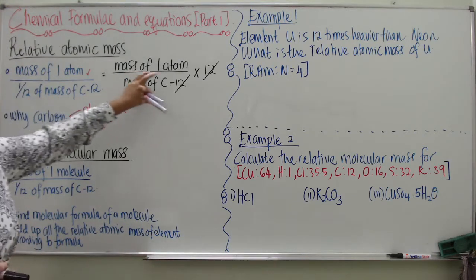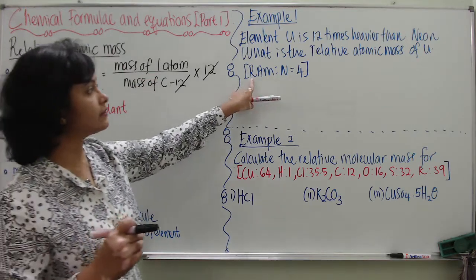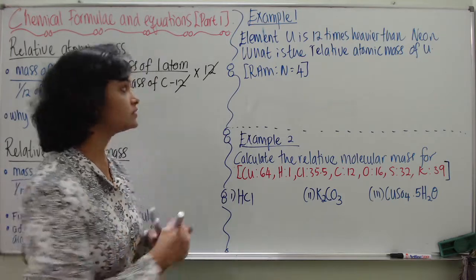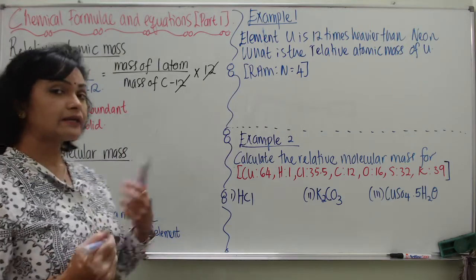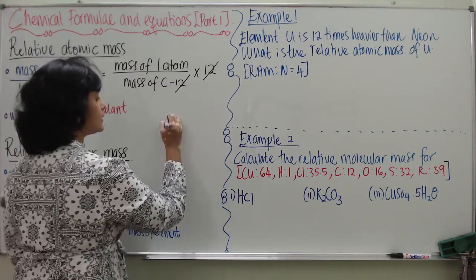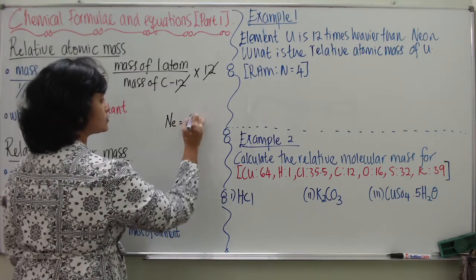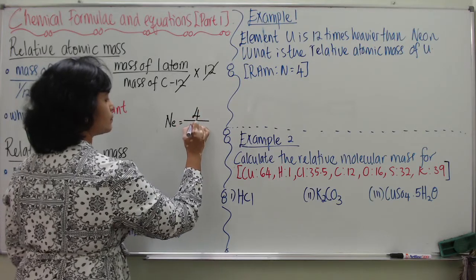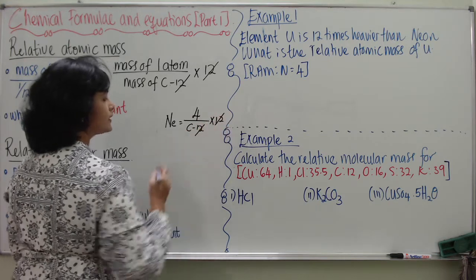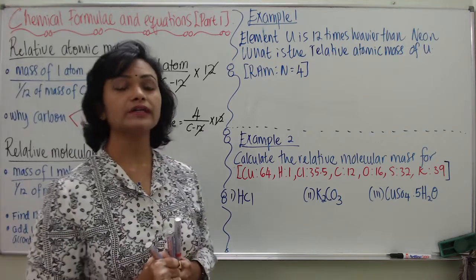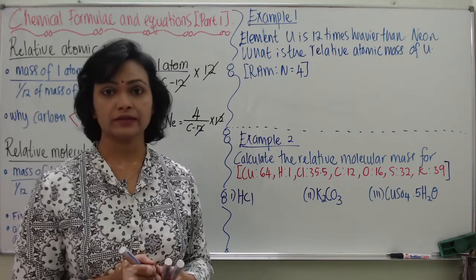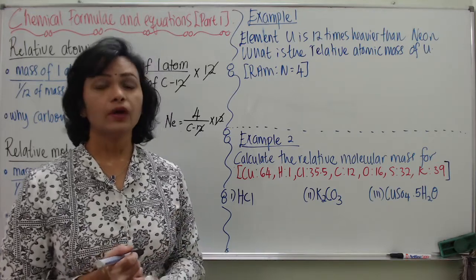We write Relative Atomic Mass as RAM. For instance, the relative atomic mass of Neon is 4. This means that the mass of Neon is related to the mass of Carbon-12 — specifically, RAM of Neon divided by the mass of one atom of C-12, times 12. We cannot use Hydrogen as the standard because it is a gas and a very, very small atom.